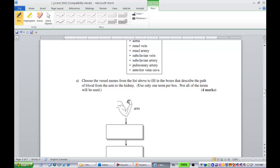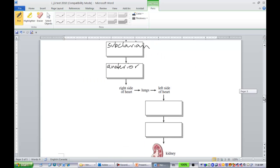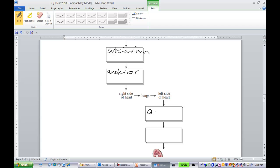This tracing, subclavian vein, anterior vena cava, back through the heart, coming out of the heart through the aorta. And then the renal to the kidney, we would take the renal artery. Easy question. Four marks.